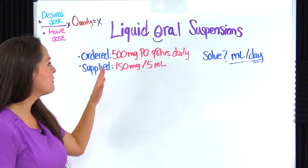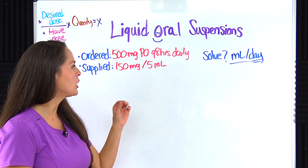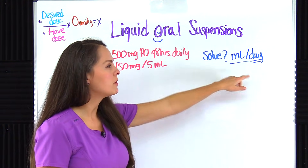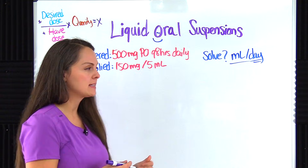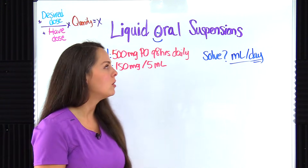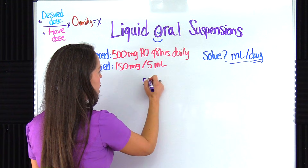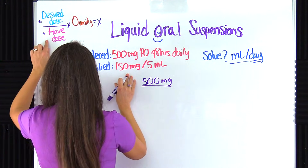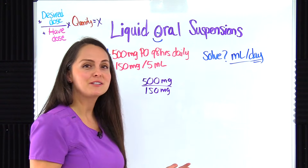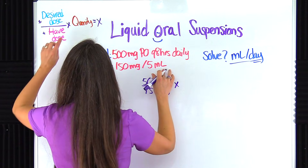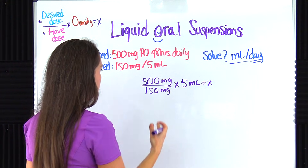This problem says we're ordered to give 500 milligrams by mouth every eight hours daily. We're supplied with a bottle that reads 150 milligrams per 5 mLs. The problem wants us to solve for milliliters per day — notice it's asking per day, not per dose. You really want to remember that, because a lot of times people give the per dose answer and that is wrong. Let's set up our formula: desired is 500 milligrams on top, have is 150 milligrams on the bottom — the units match, no conversion needed — times the quantity of 5 mLs, equals x.